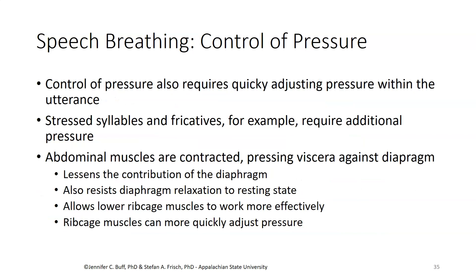Control of pressure also requires quickly adjusting pressure within the utterance. For stressed syllables and fricatives, for example, there is additional pressure required. During speech breathing, the abdominal muscles are contracted, pressing the viscera against the diaphragm. This lessens the contribution of the diaphragm to respiration and resists the diaphragm's return to the resting state. The abdominal muscles as stabilizers allow the lower ribcage muscles to work more effectively, and the ribcage muscles are used to quickly adjust the required pressure for speech.